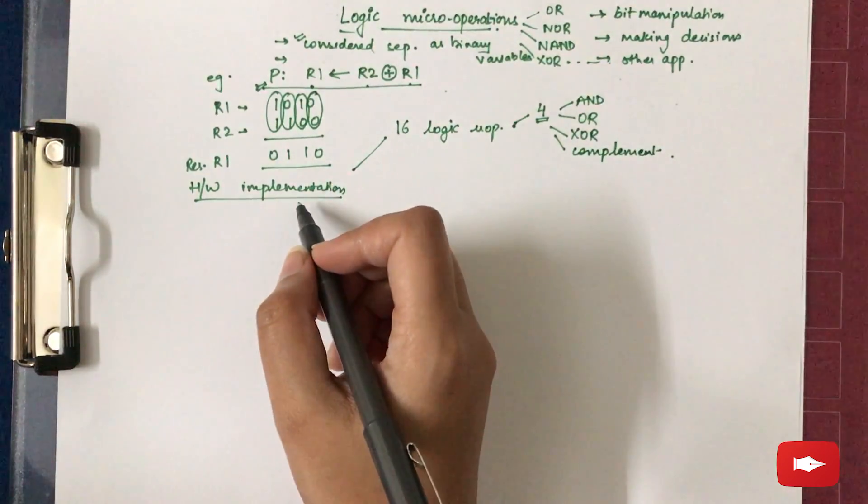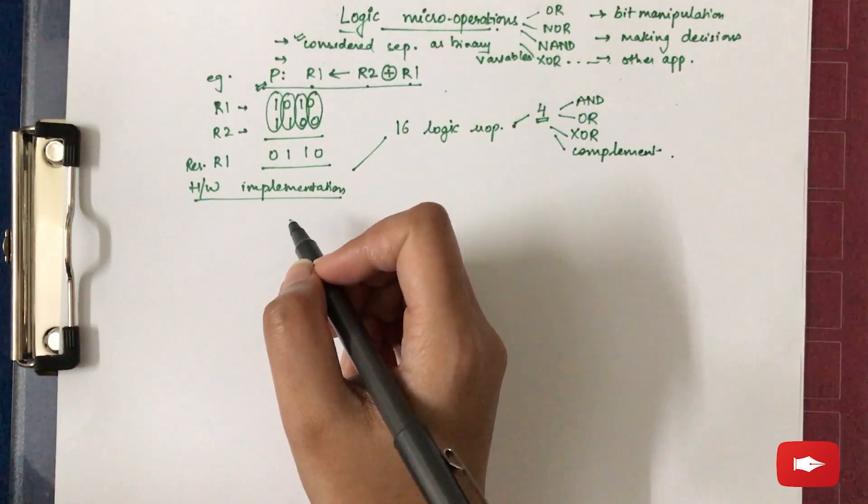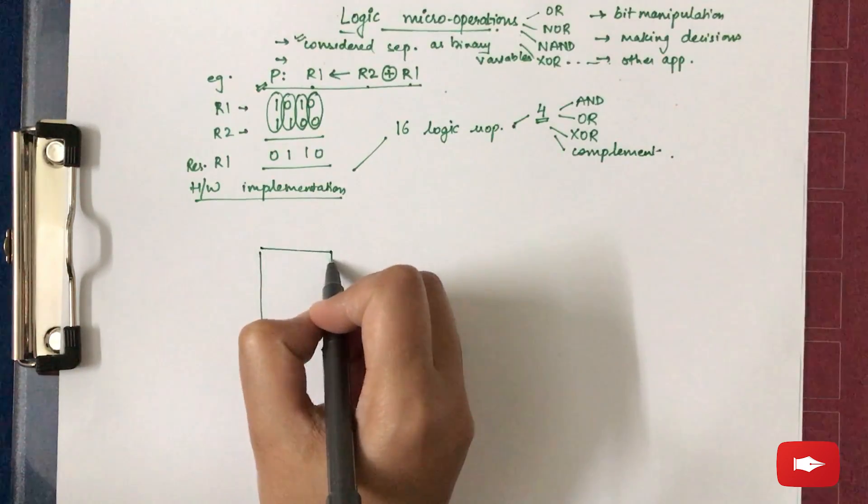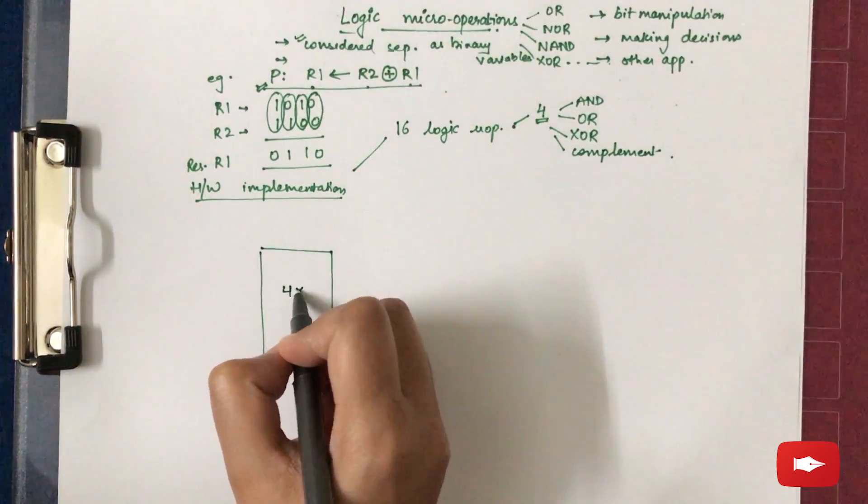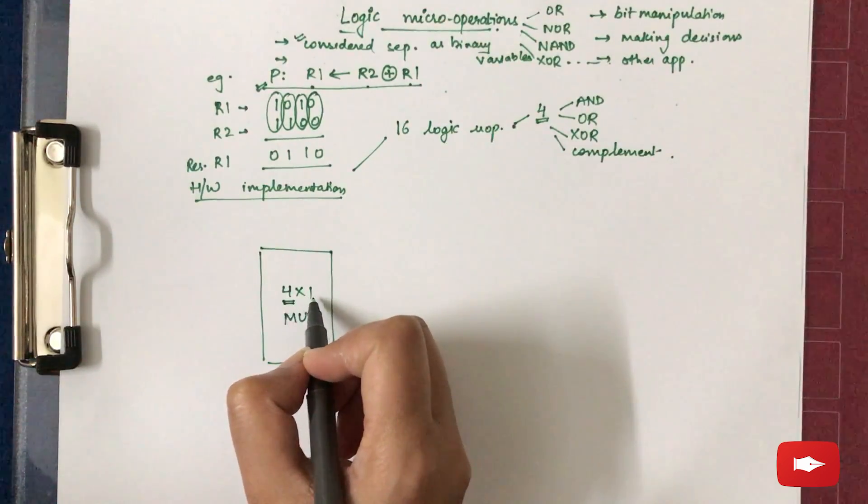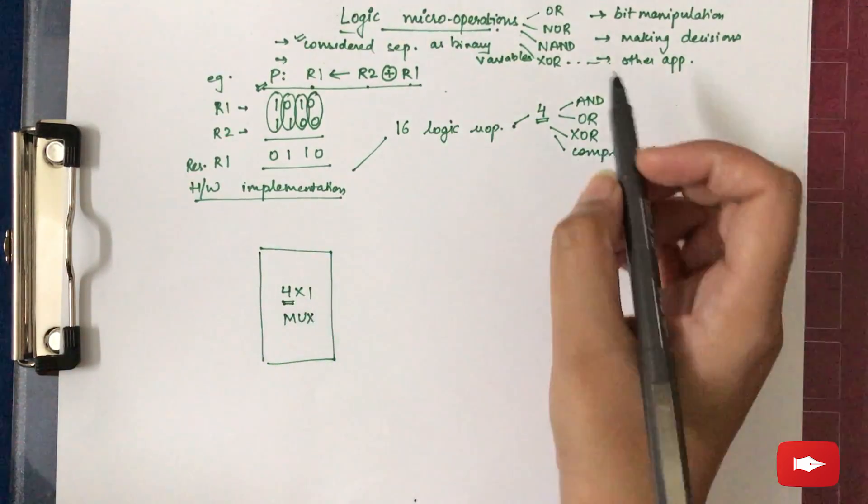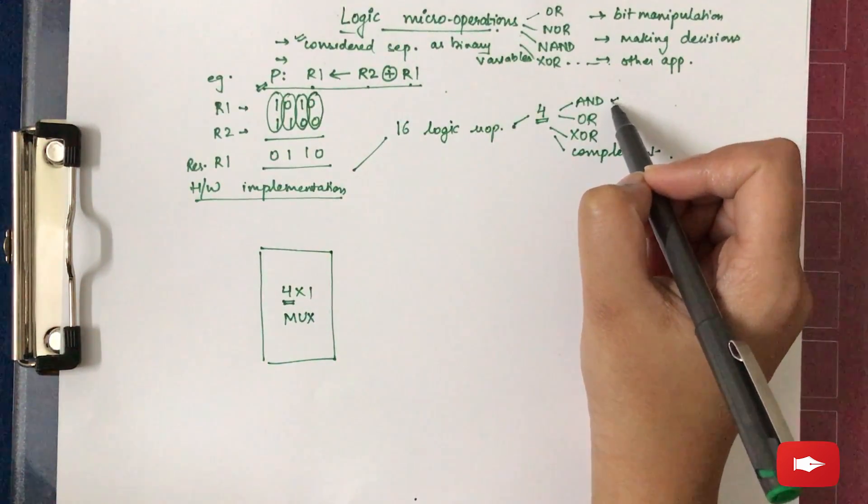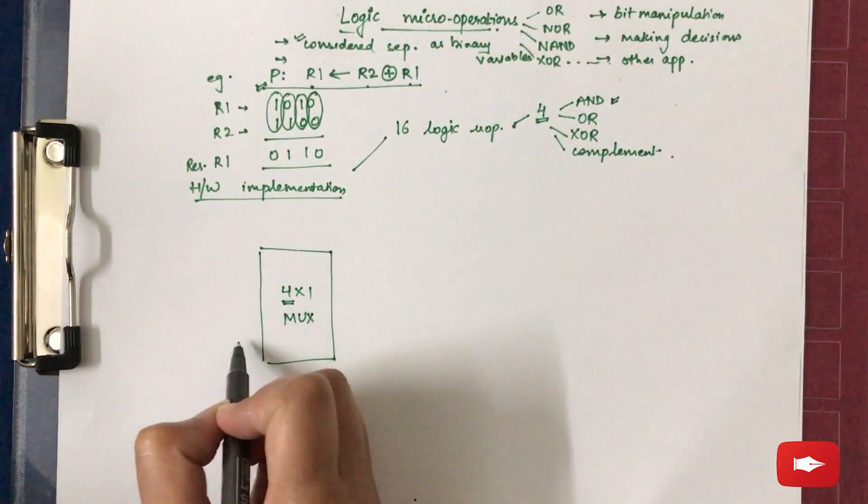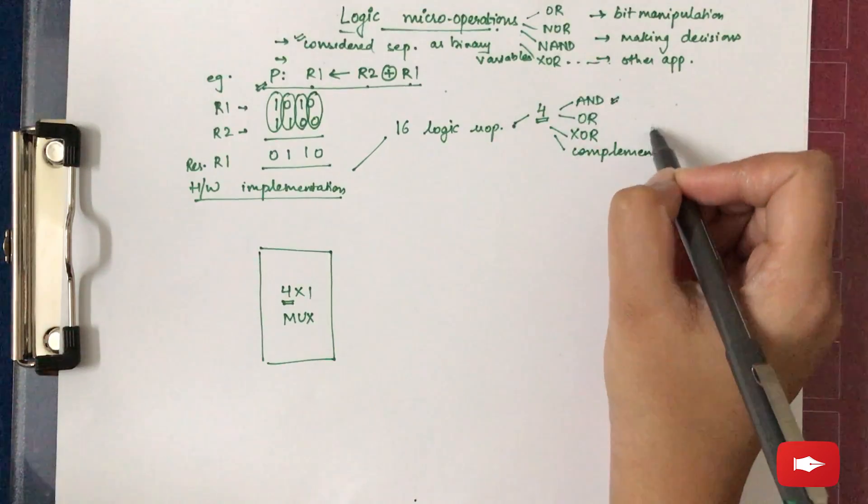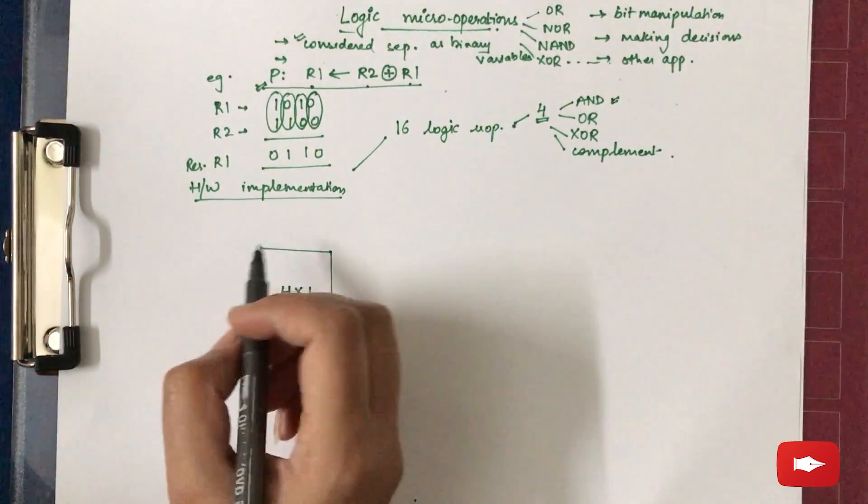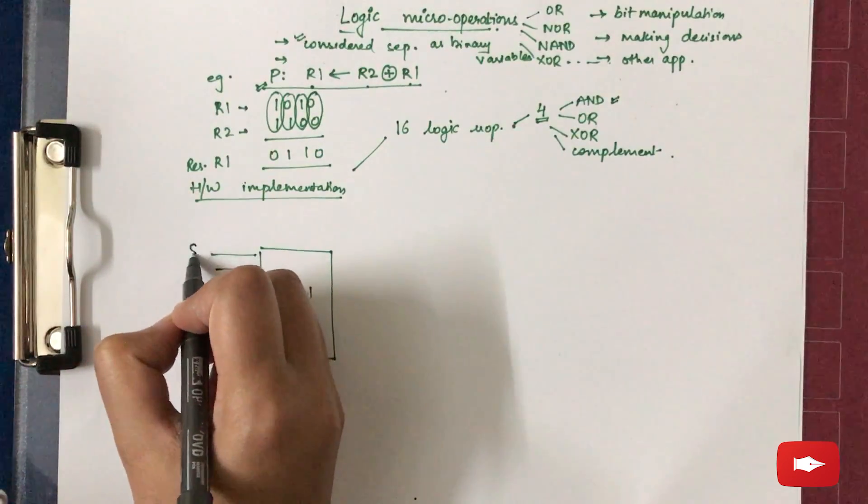Now for hardware implementation, that is for making the logic circuit for logic micro operations, we need a 4×1 multiplexer. To understand why we need 4×1 multiplexers, the reason is that because we are considering only the 4 commonly used micro operations, we only need 4 inputs, and out of these 4 micro operations, one will be selected and given as output. There will be 2 select lines S1, S0 for selecting one of these 4 operations to be performed.